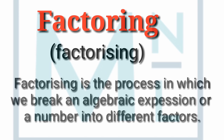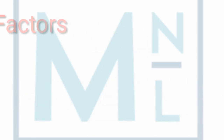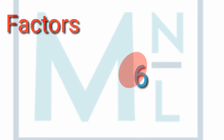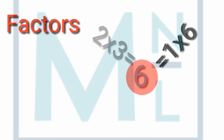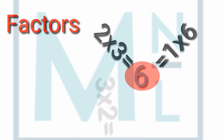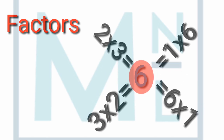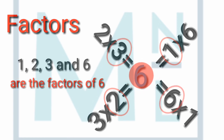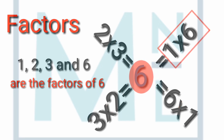Today we will only learn about factoring of numbers — how we can break numbers into factors. Before that, let's talk about what factors are. I'll give you a good example: if I ask you to find the factors of 6, or in simple words, in which tables does 6 appear? You would say: 1 times 6 is 6, 2 times 3 is 6, 3 times 2 is 6, 6 times 1 is 6. So 1, 2, 3, and 6 are all factors of 6, because 6 appears in the tables of 1, 2, 3, and 6.